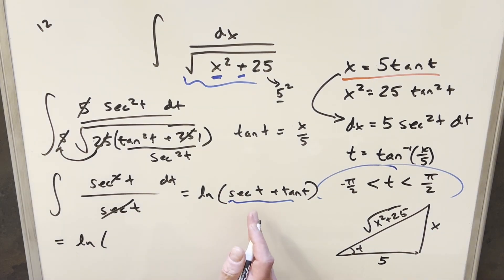So then coming over here for the rewrite, we'll have natural log. Secant of t is going to be hypotenuse over adjacent. So this is going to be square root x squared plus 25 over 5. And then our tan t will be this, x over 5.